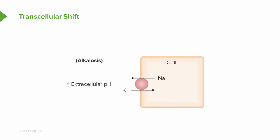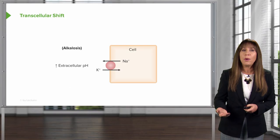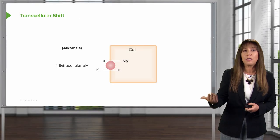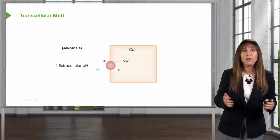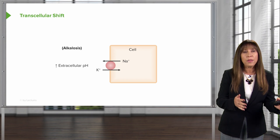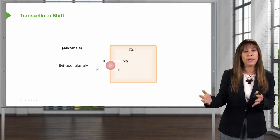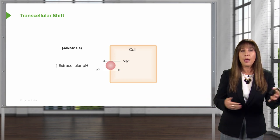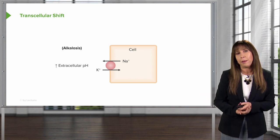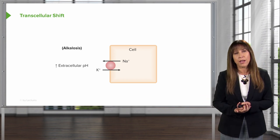When a patient has alkalosis, protons will leave the cell in order to lower the extracellular pH. But we have to maintain electroneutrality, so potassium will enter the cell in exchange, and patients can become hypokalemic because of that.